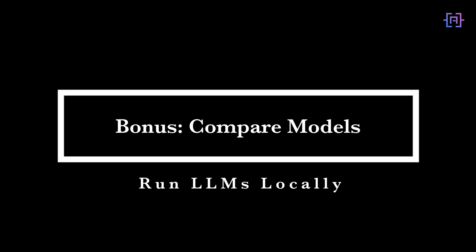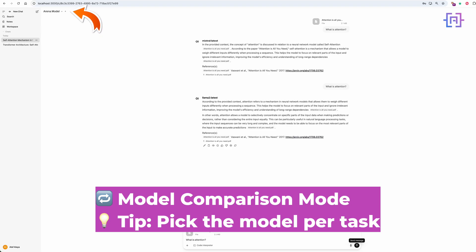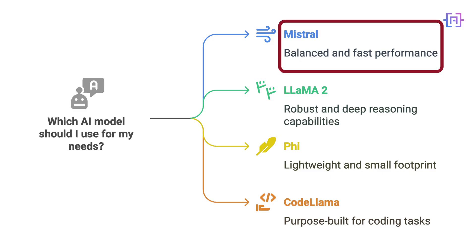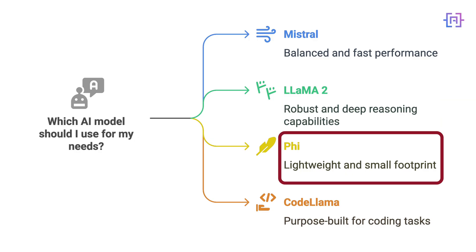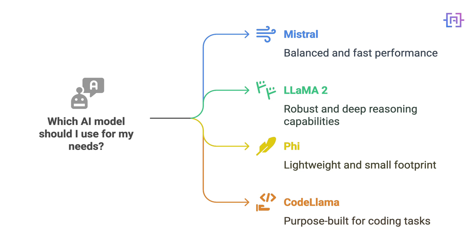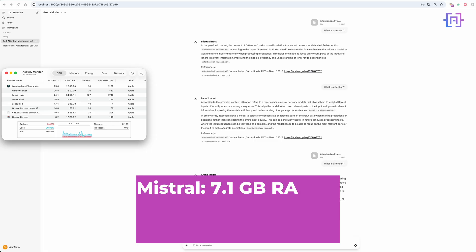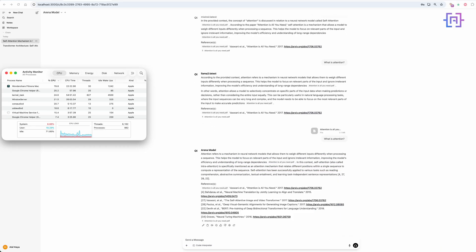Here's where it gets fun — you can try different models based on what you need. Mistral is for balanced and fast tasks. Llama 2 offers robust and deeper reasoning. Phi is lightweight with a small footprint. Code Llama is purpose-built for coding. Test the same prompt side by side, watch how each one answers differently, and monitor RAM usage to find your sweet spot. Try them all and see what fits your workflow.